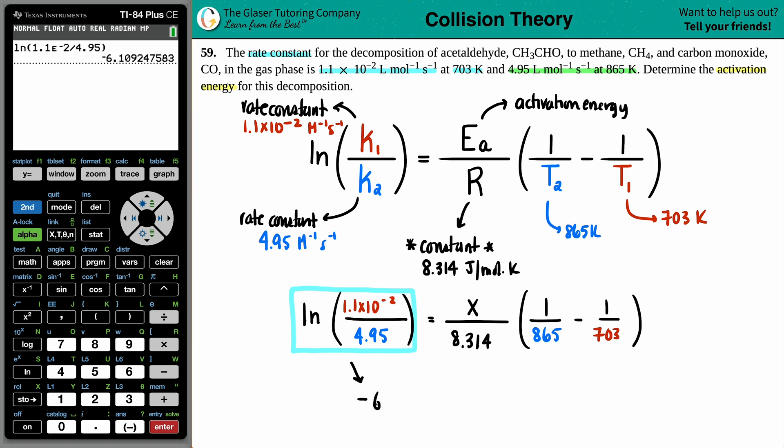This would be negative 6.109 equals, we'll leave this for right now, X over 8.314. But then the next thing that you could do is since you know both temperatures, you could plug this all in one shot in calci. I'm going to say 1 divided by 865 minus 1 divided by 703. Press that. Beautiful. So negative 2.664 times 10 to the negative fourth.